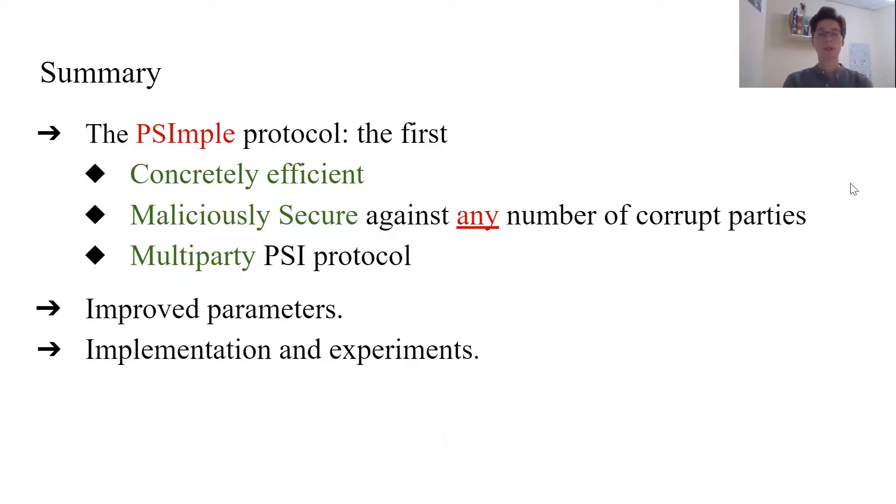PSImple is the first concretely efficient, maliciously secure against any number of corrupt parties' multiparty PSI protocol. There were no concretely efficient, maliciously secure PSI protocols prior to our work. We revisit the parameter analysis of previous works on efficient PSI based on garbled bloom filters and oblivious transfer. Performing a careful analysis, we were able to reduce the number of required OT calls by up to 25%. This improvement also implies a stronger security guarantee. We implemented PSImple, incorporated several code optimizations, and run experiments with up to 32 parties and 2 to 20 inputs to show the practicality of PSImple. These results show that PSImple is competitive even with the previous concretely efficient, semi-honest, multiparty PSI protocols.